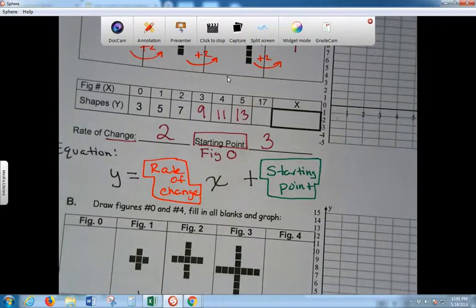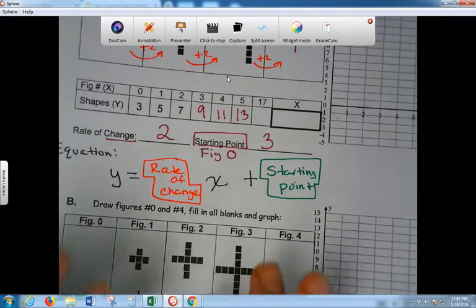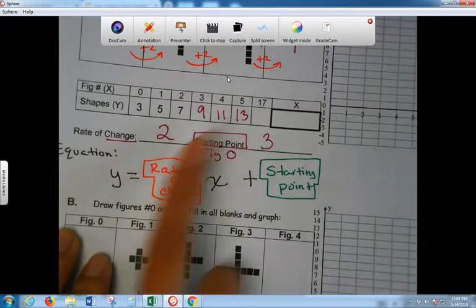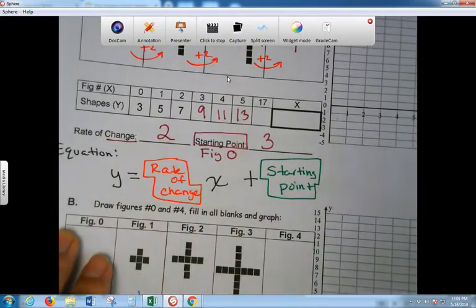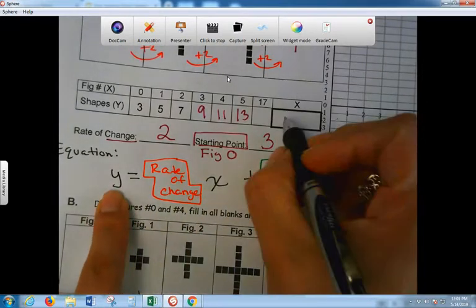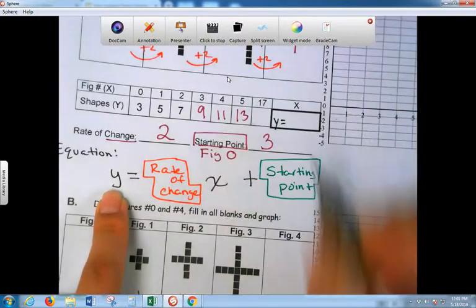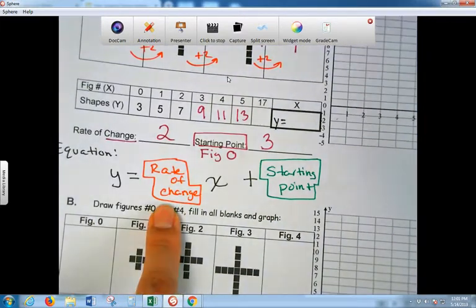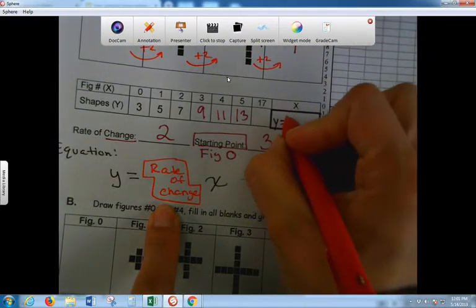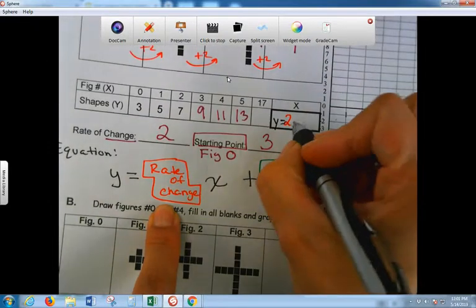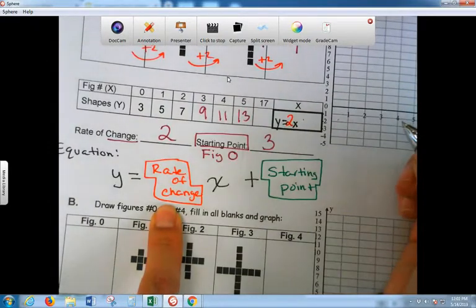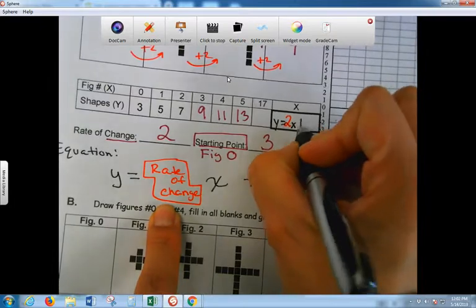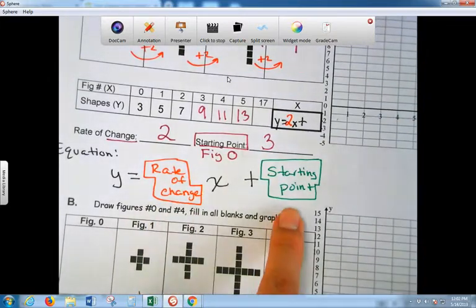So what is the equation to this problem using this? Y, X. So it starts with y. Good. Y equals. Equals. 2X. 2X. Yes. 2X. Plus. Plus. 3. 3. Very good.